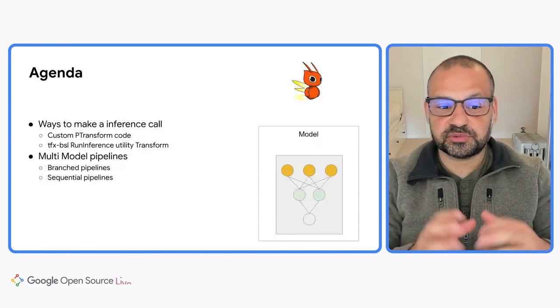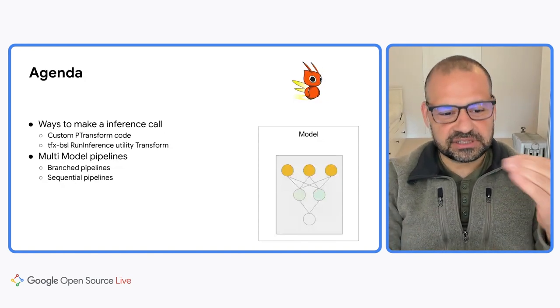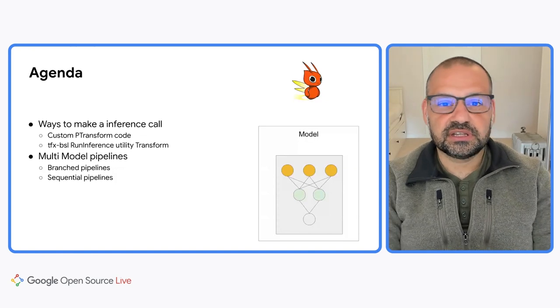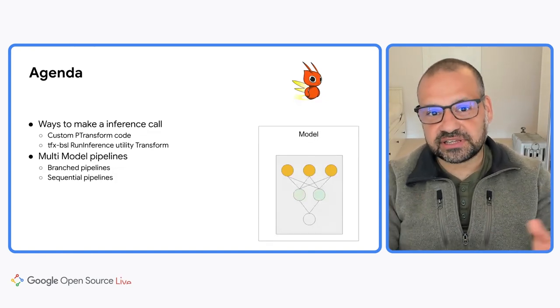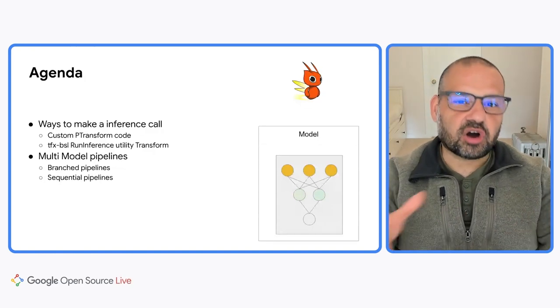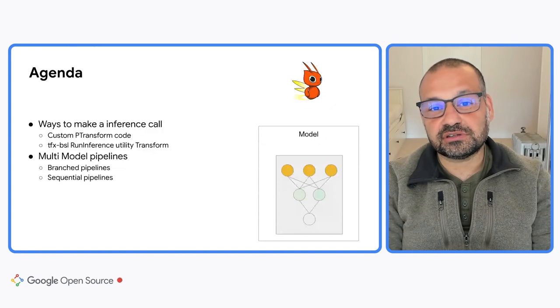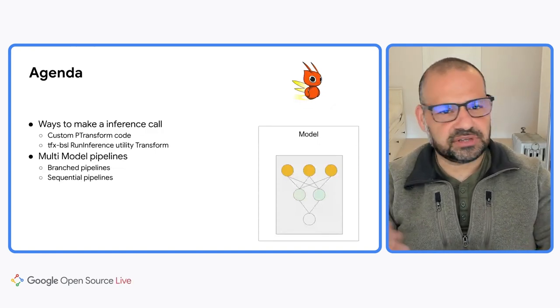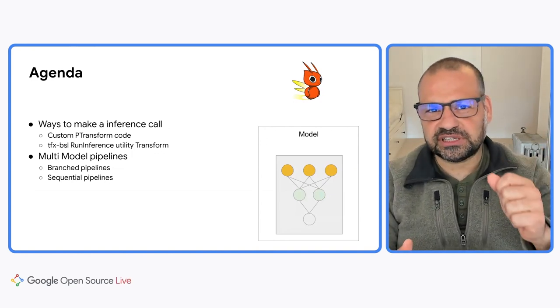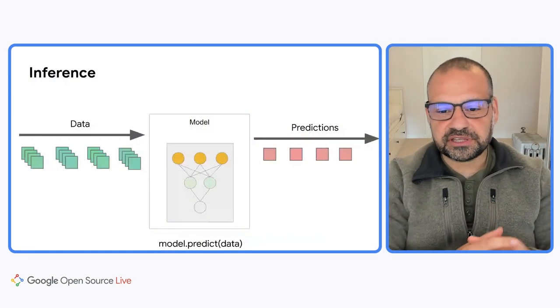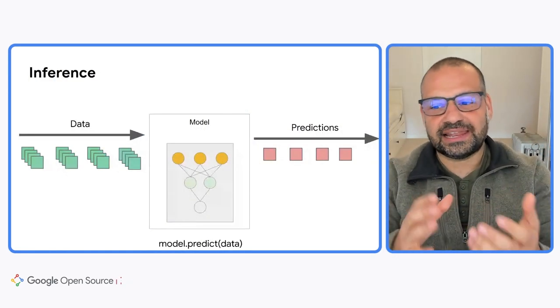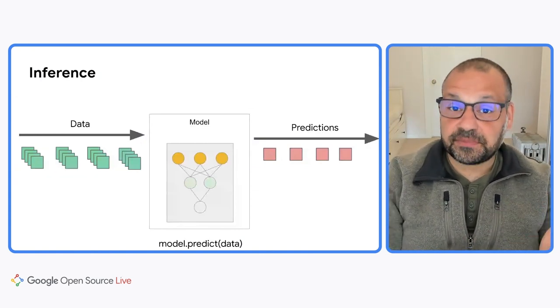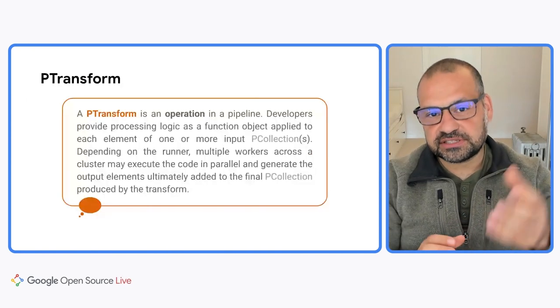There are a couple of ways that people can make a call. First, you can hand-code the prediction call within a p-transform — there's a lot of boilerplate involved in that. We'll talk about a utility class known as RunInference from TFX (TensorFlow Extended) that takes away some of the boilerplate. And because Apache Beam allows you to build complex pipelines, we will then show how you can run with multiple models within the same pipeline. This is for things like doing A/B testing or sequential models where you have one model feeding the prediction into a secondary model. So let's go through the concepts we need to actually make the custom call. If we think about a machine learning model, we have our data points, we feed them to the model, we run a predict call, and at the output we will have some predictions.